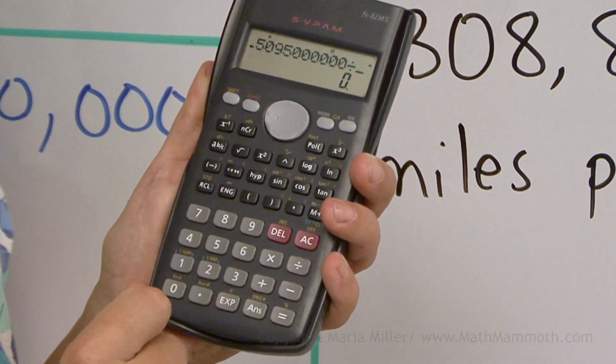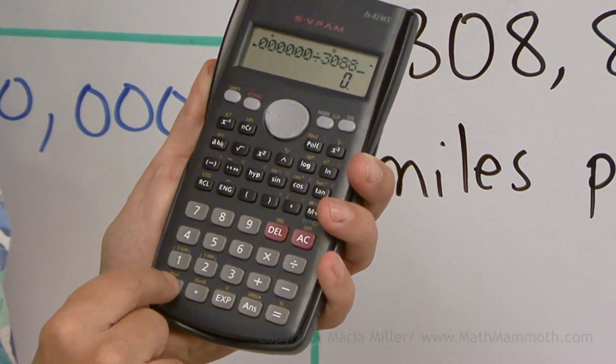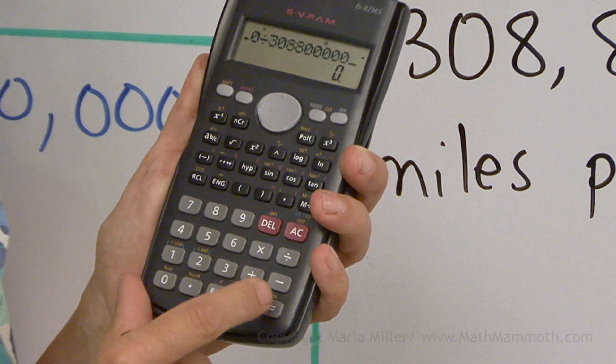Then divide. And then 3, 0, 8, 8, 0, 0, 0, 0, 0, 0. And then equals.